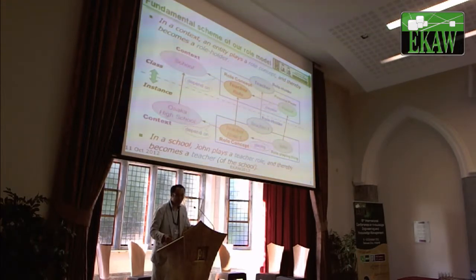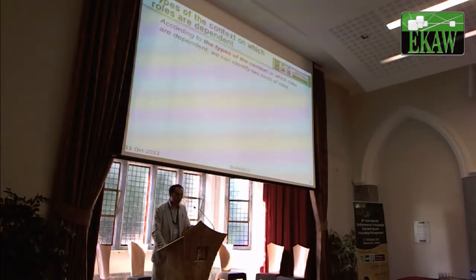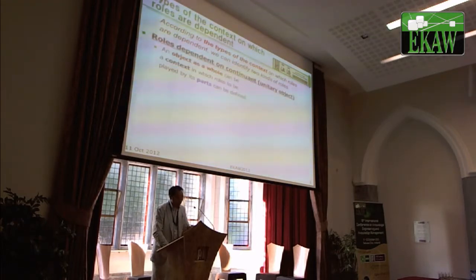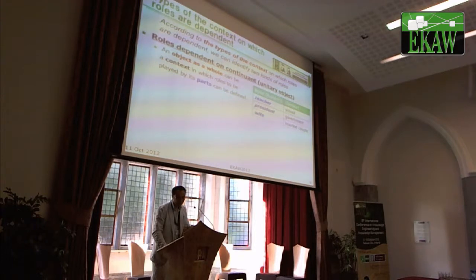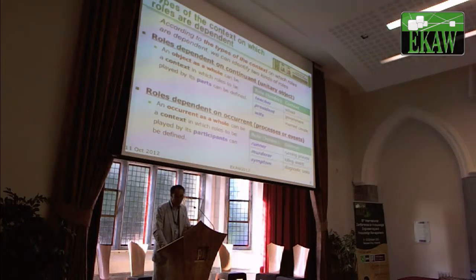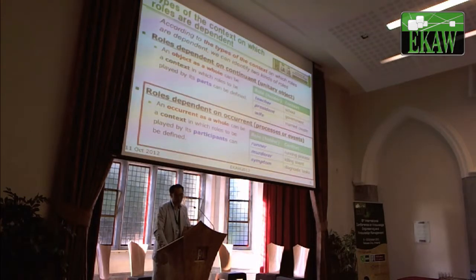Based on this model, according to the type of context on which roles are dependent, we can identify two kinds of roles. The first one is a role dependent on a continuous context — examples include teacher, president, and so on. The second one is a role dependent on an occurrence — examples include runner, murderer, symptom, and so on.